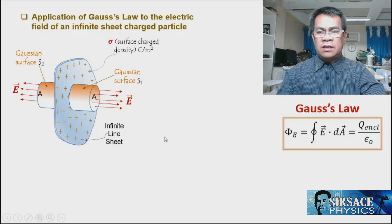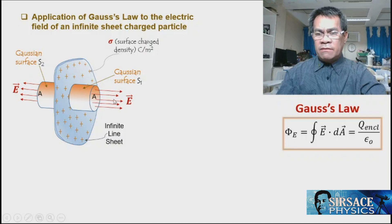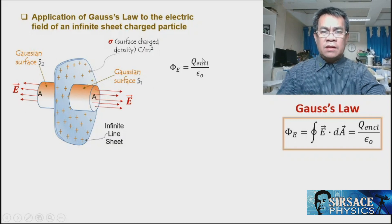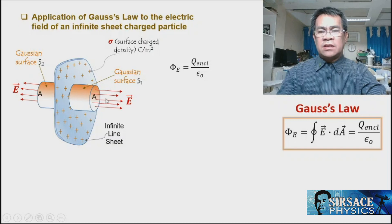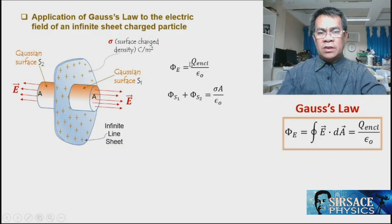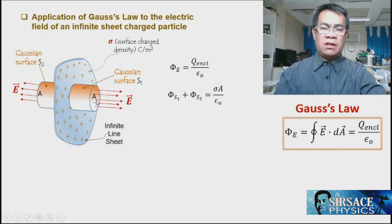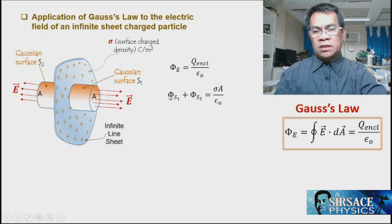The total flux is the sum of fluxes on both surfaces, equal to the enclosed charge over permittivity. The enclosed charge is the surface charge density σ times the area A. So: Φ₁ + Φ₂ = σA / ε₀.